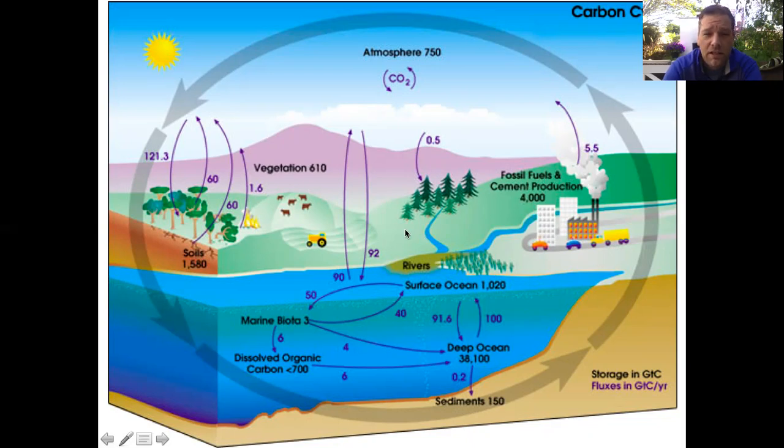You can see here that we've got carbon that goes into the atmosphere out of our oceans. It's sort of a balance. You've got carbon going from the oceans into the atmosphere, and you also have carbon going from the atmosphere into the oceans.